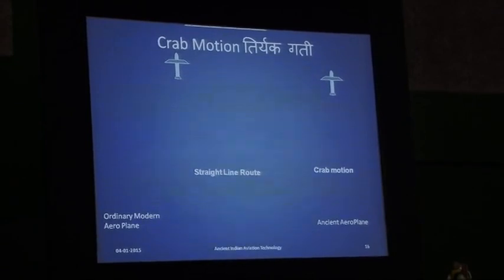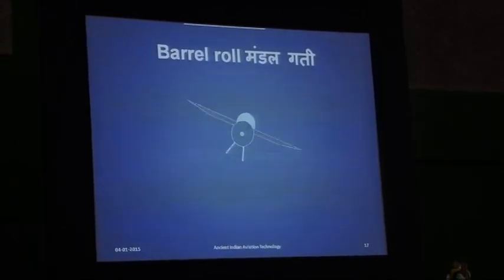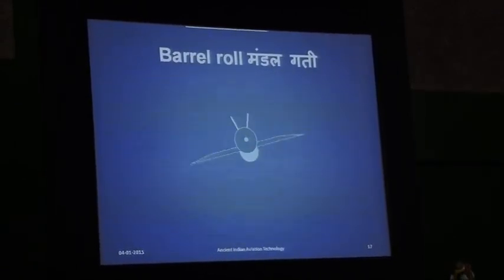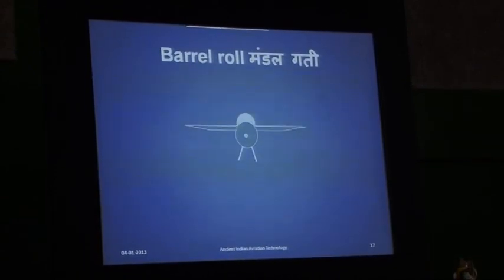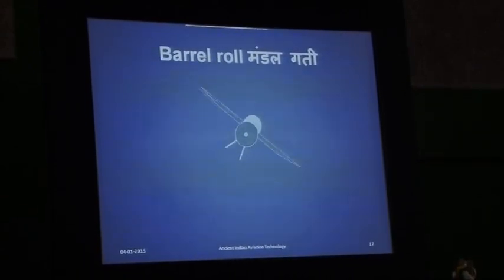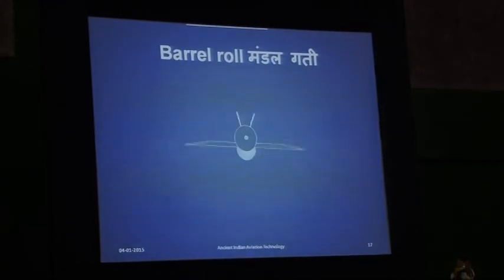That means: first to lift off, then construction, then operating the aeroplane, then stopping the aeroplane in the air, then going forward, then chitra gati and vichitra gati — and the speeds that Bharadvaj Rushi talks about.